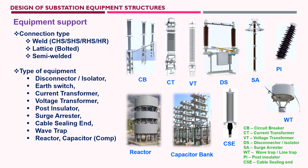When it comes to structure types for equipment support, there are only three types based on connection type. The first is welded — in welded, cold-formed profiles include CHS (circular hollow section), SHS (square hollow section), and RHS (rectangular hollow section). Hot-rolled profiles include H-sections, U-profiles, channel sections, and I-sections.